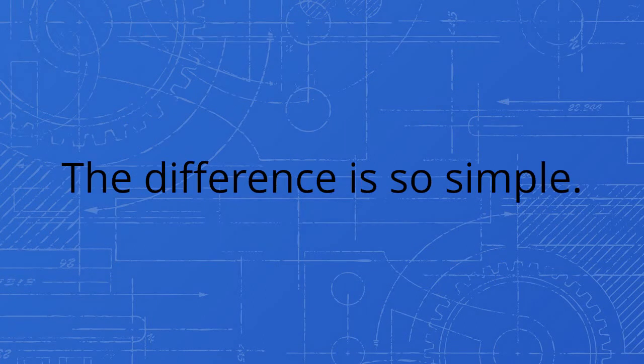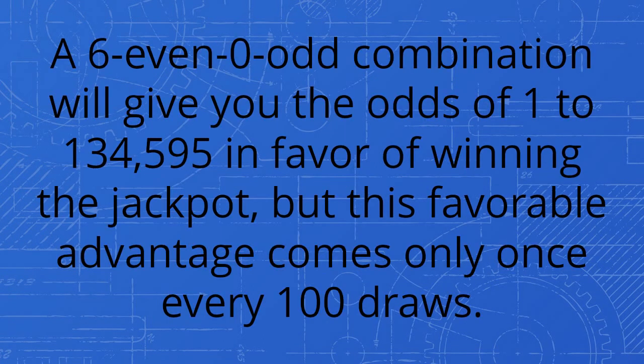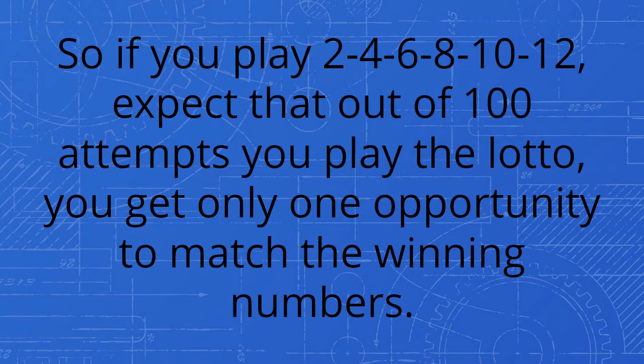The difference is so simple. A 6-even-0-odd combination will give you the odds of 1:134,595 in favor of winning the jackpot, but this favorable advantage comes only once every 100 draws. So if you play 2-4-6-8-10-12, expect that out of 100 attempts you play the lotto, you get only one opportunity to match the winning numbers.